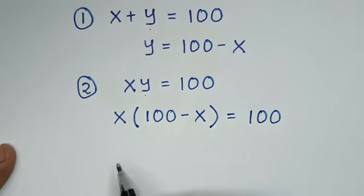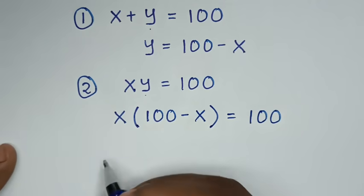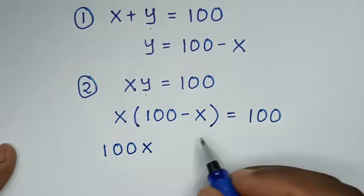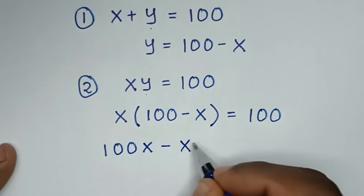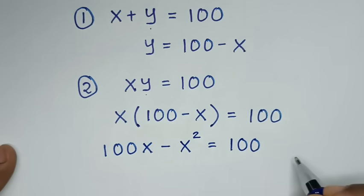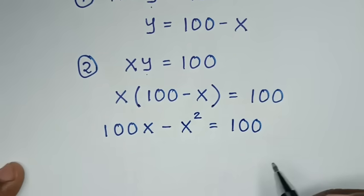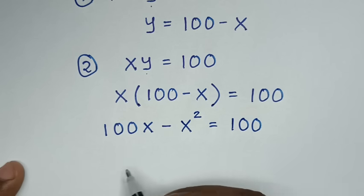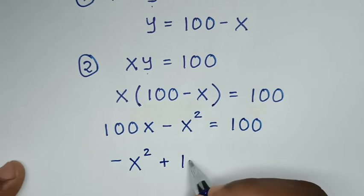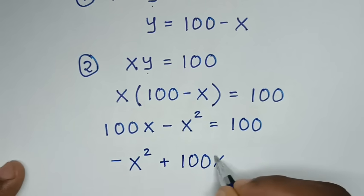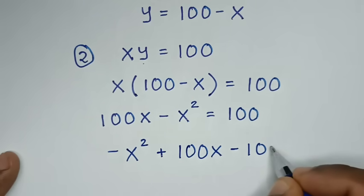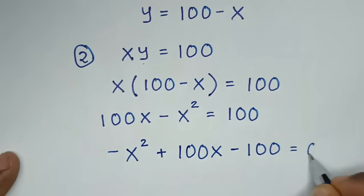In the next step, we will multiply: x times 100 is 100x, x times negative x is negative x squared, is equal to 100. So we have 100x minus x squared equals 100. Taking 100 to the left side gives minus 100 is equal to 0.